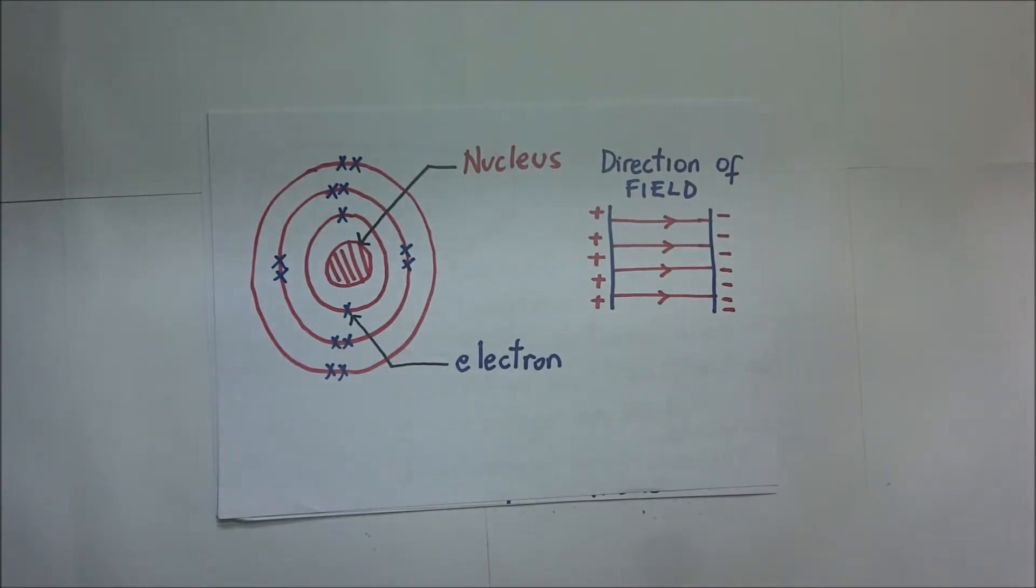However, the structure of metals is such that each atom on average will have an outermost electron that is not required for bonding. So when the metal is not subject to any EMF or potential difference, these electrons will keep moving freely within the atomic structure.